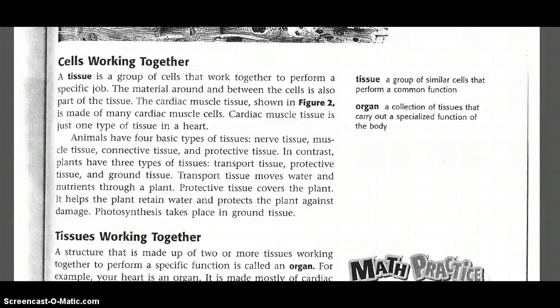Cells working together. A tissue is a group of cells that work together to perform a specific job. The material around and between the cells is also part of the tissue. The cardiac muscle tissue, shown in Figure 2, is made of many cardiac muscle cells. Cardiac muscle tissue is just one type of tissue in a heart.